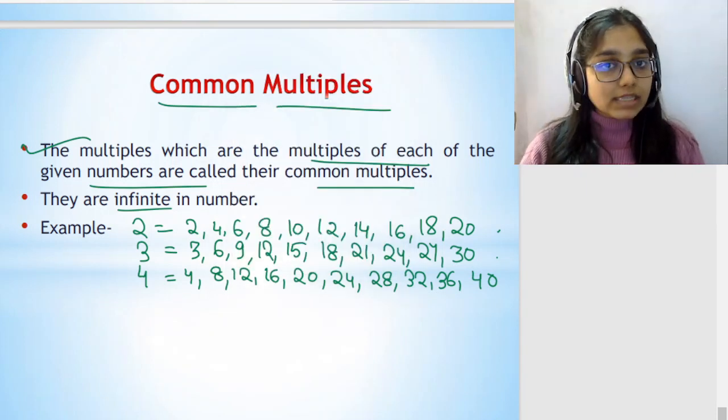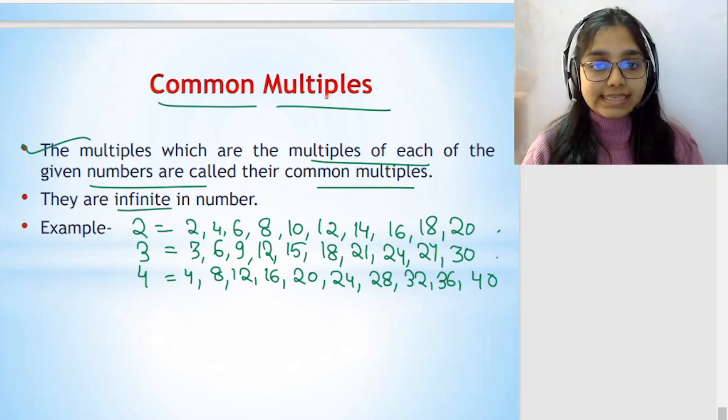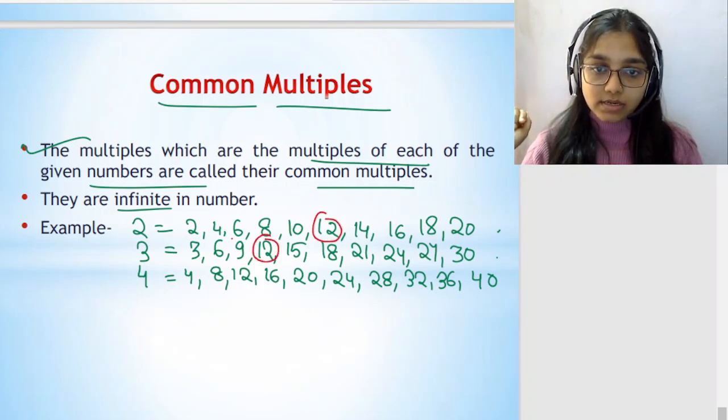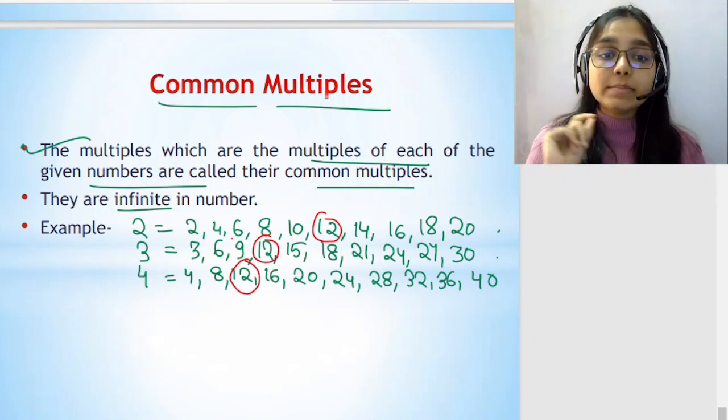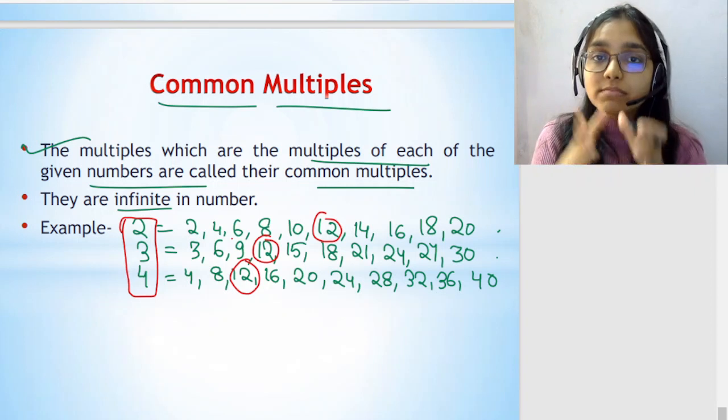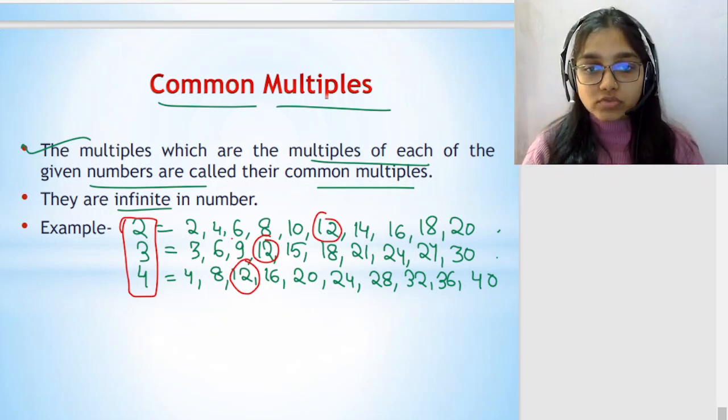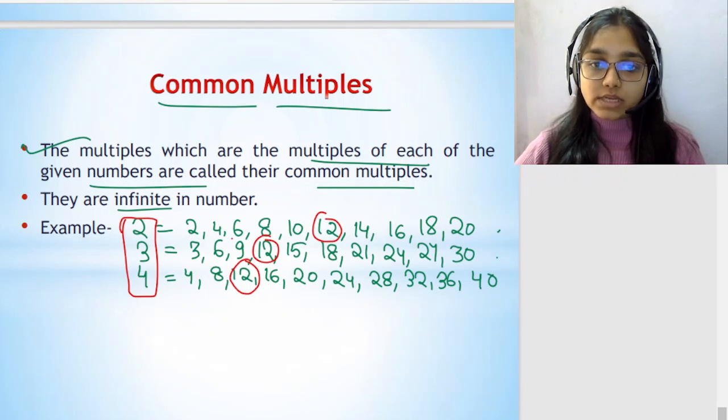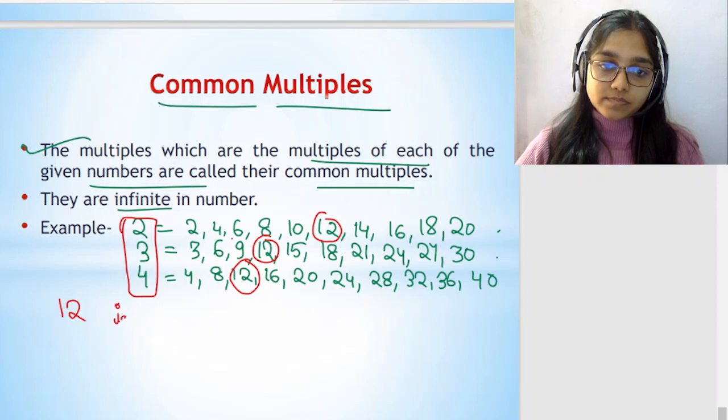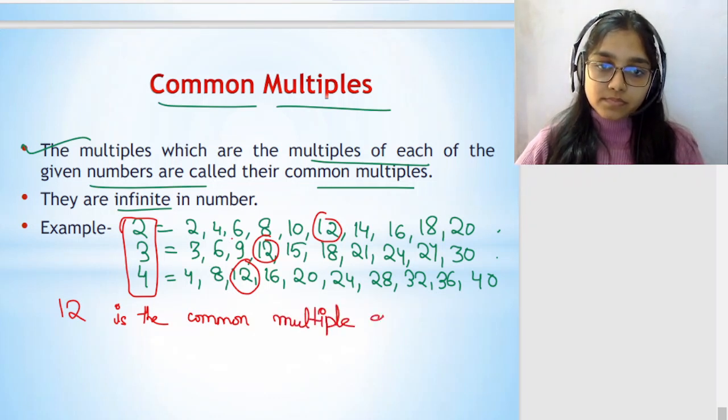Now, is 2 a common multiple in all three? No. Is 4 in all three? No. 6 is here and here, but not here. 8, no. 10, no. 12 is there in all the 3. So, this 12 is a common multiple of 2, 3, and 4, meaning 12 comes in the table of all three. Is there any other number that is in all three? 20 is not there. 14, 16, 18, 18 is not there. So we can say that 12 is the common multiple of 2, 3, and 4.